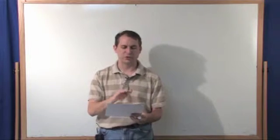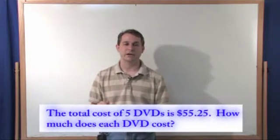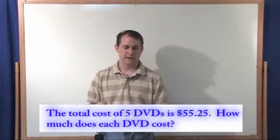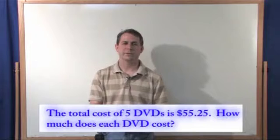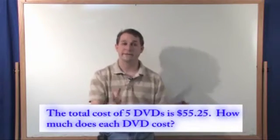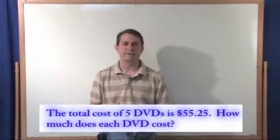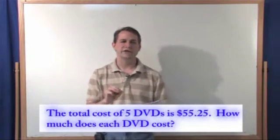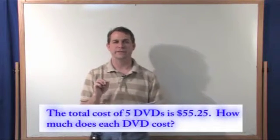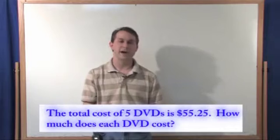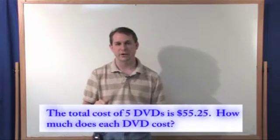So the first problem says: the total cost of five DVDs is $55.25. How much does each DVD cost? This is what I was saying earlier where you're given the total amount of something - in this case the total cost of five DVDs is $55.25. How much does each DVD cost? That is a dead giveaway for division because you're given a total amount of money, $55.25, and you know that there's five DVDs involved.